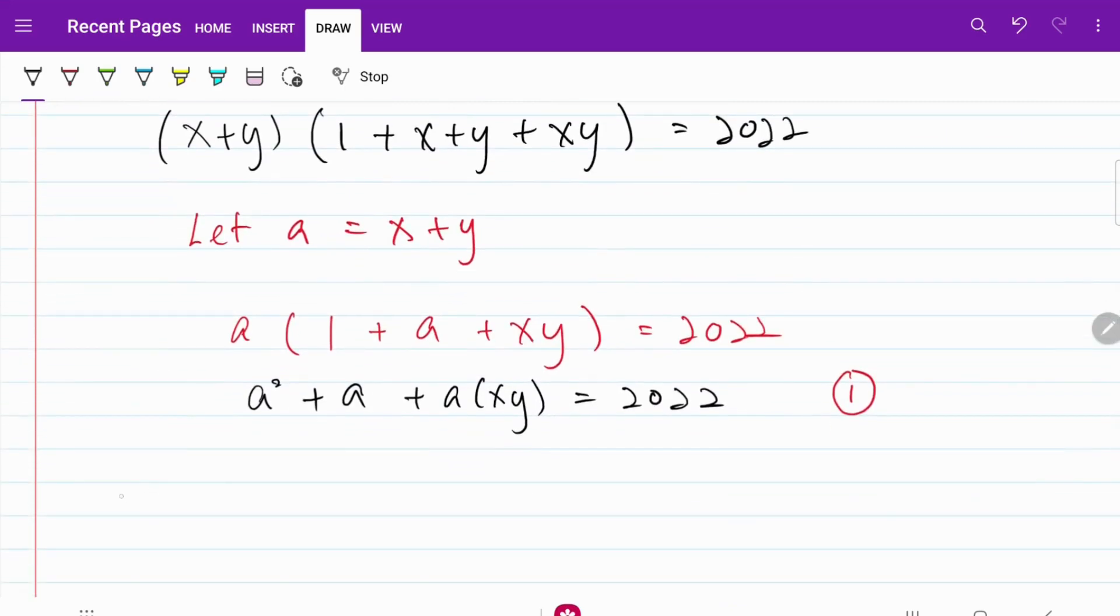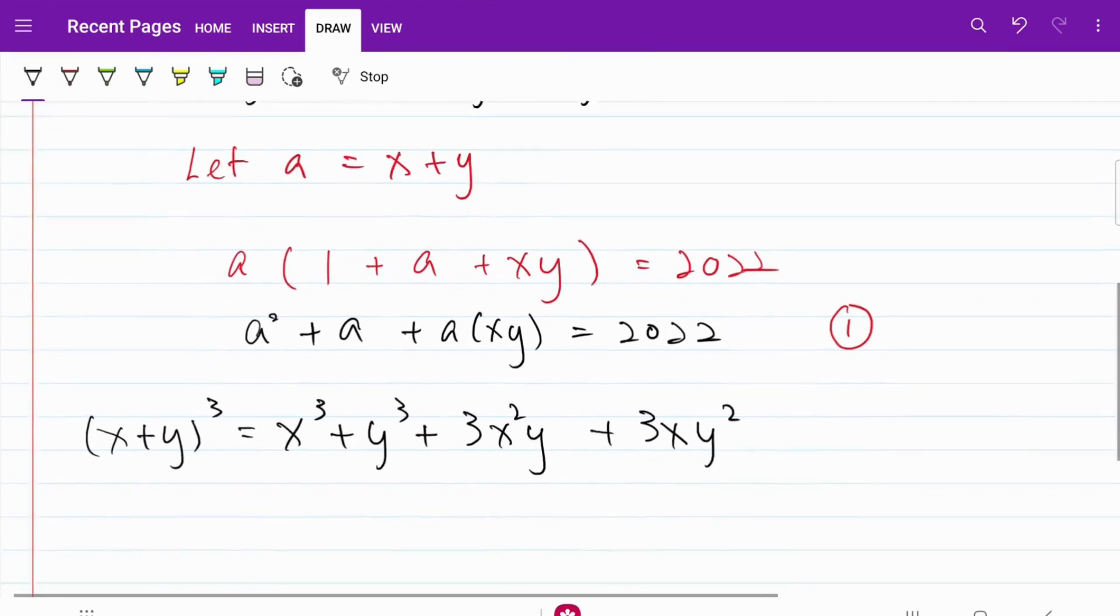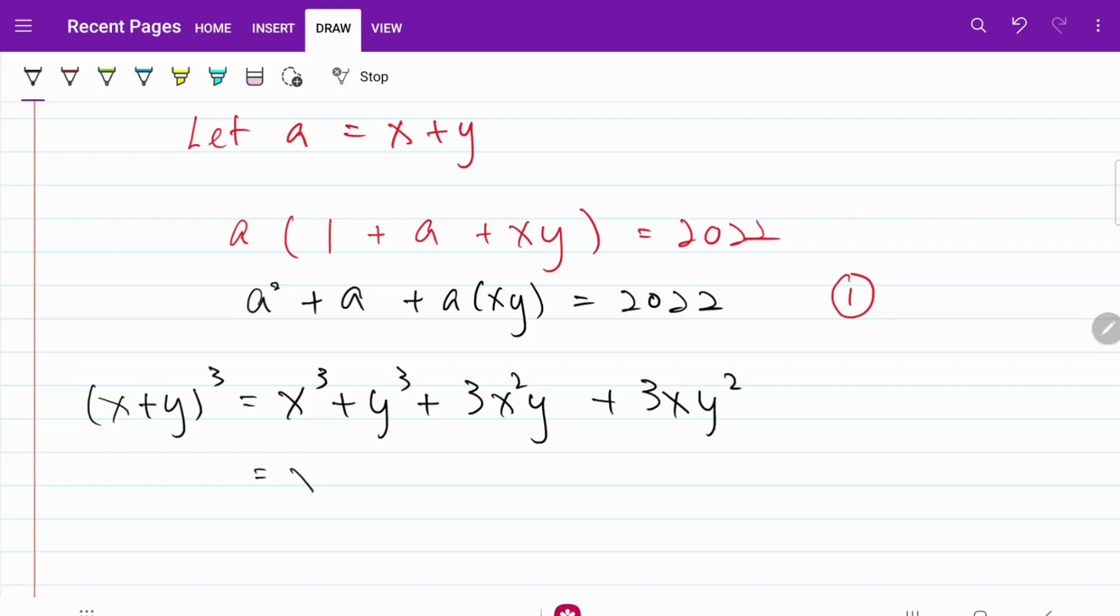So what I have now is x plus y cubed equals x cubed plus y cubed plus 3x squared y plus 3xy squared, which simplifies to x cubed plus y cubed plus 3xy times x plus y.